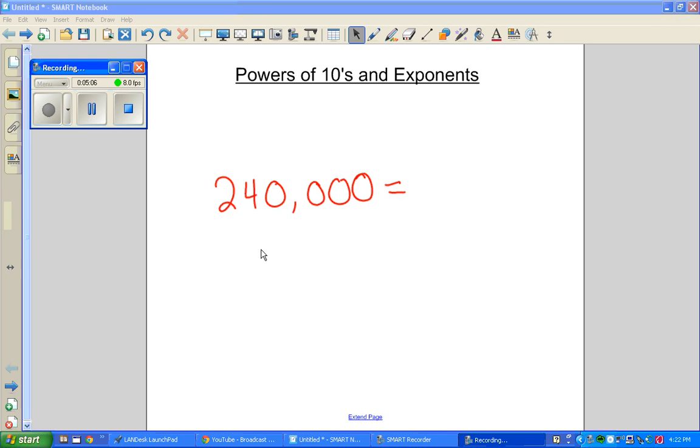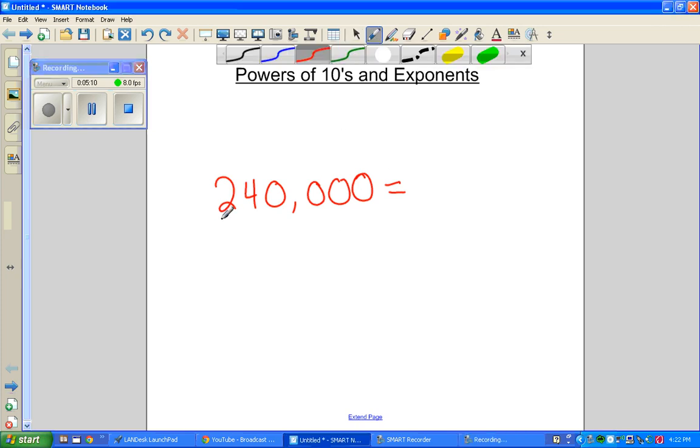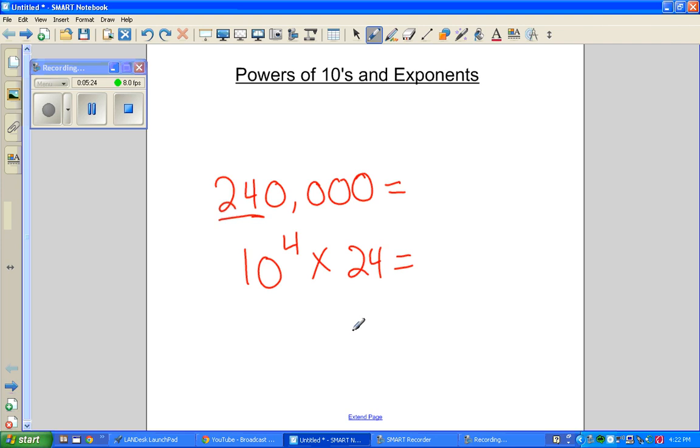Here's a bigger one. 240,000. To make that into an exponent, we actually have to look at these two top numbers. Okay? How many zeros do we have? 1, 2, 3, 4. 24 times 10 to the 4th power equals our answer. It actually is not too bad when you actually look at it that way.